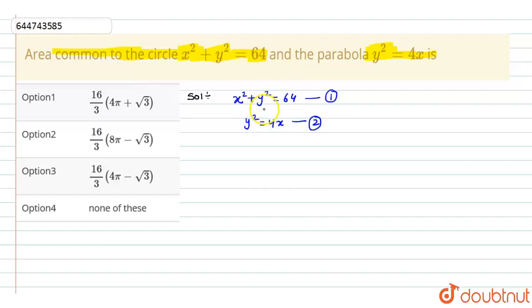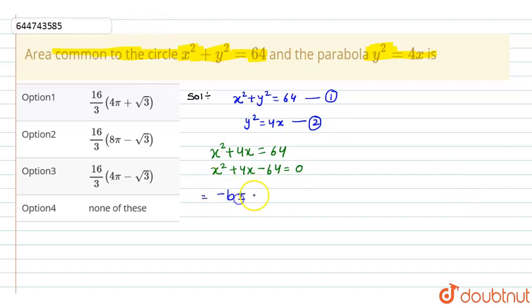Now we have to find the point of intersection. Put the value y² = 4x into equation 1. We get x² + 4x = 64. From here we get a quadratic equation: x² + 4x − 64 = 0. Here the value of b is 4, a is 1 (coefficient of x²), and c is −64.